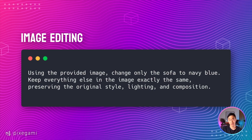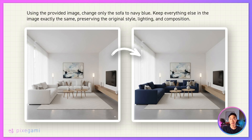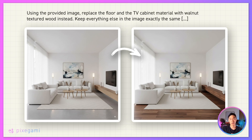This technique is called inpainting — and here's the prompt template for that. For this example, I uploaded a living room photo and asked it to change the sofa to a navy blue color. As you can see, it kept the lighting, the walls, the coffee table, and everything else exactly the same, but only changed the sofa color. This technique is called inpainting or semantic masking, and it's really useful for making targeted edits to an image. Here's another example where we're turning the floor and the TV cabinet into a walnut wood material. If you want to change multiple things, you could try to do that all in one prompt, or it might be more effective to do it in several steps — that's a technique we'll cover later as well.